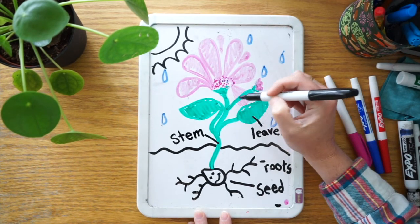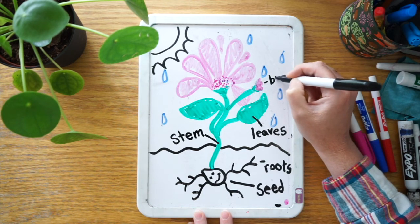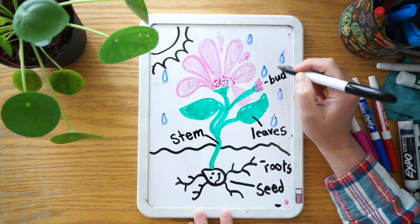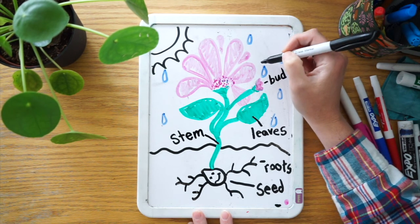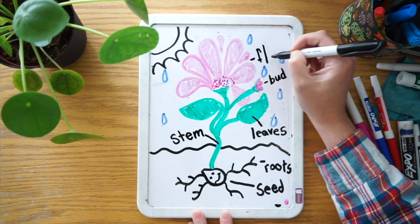And from the leaves, we have a bud, which is what a flower is before it opens up. And then when it opens up, we have the flower.